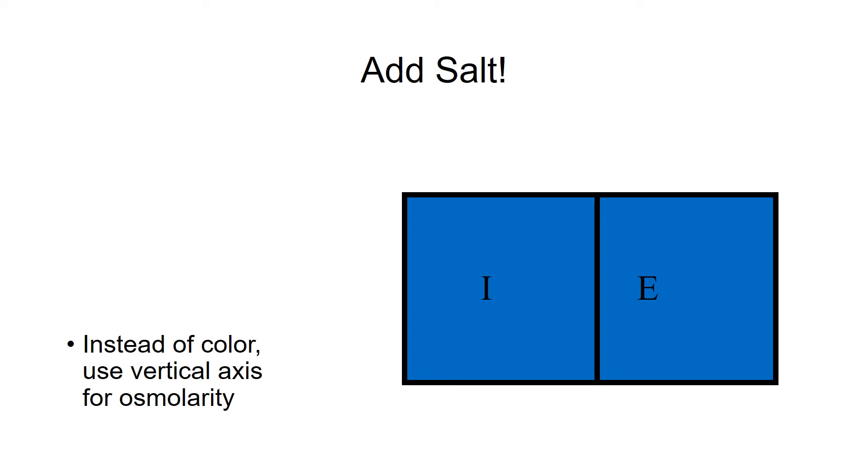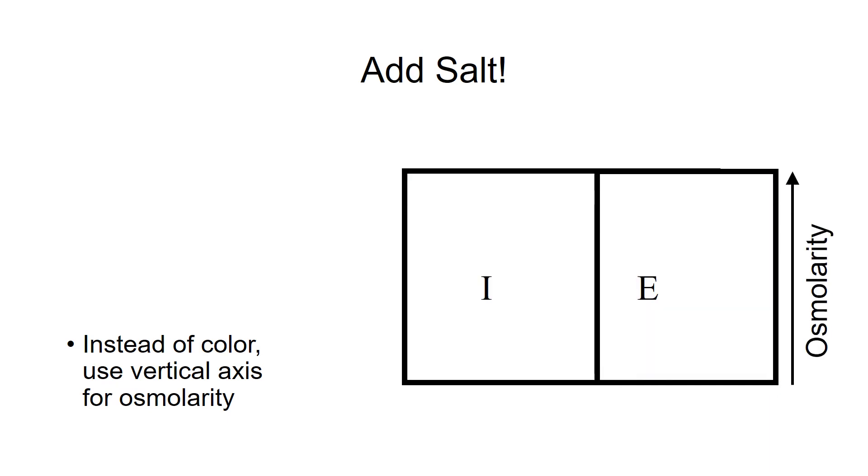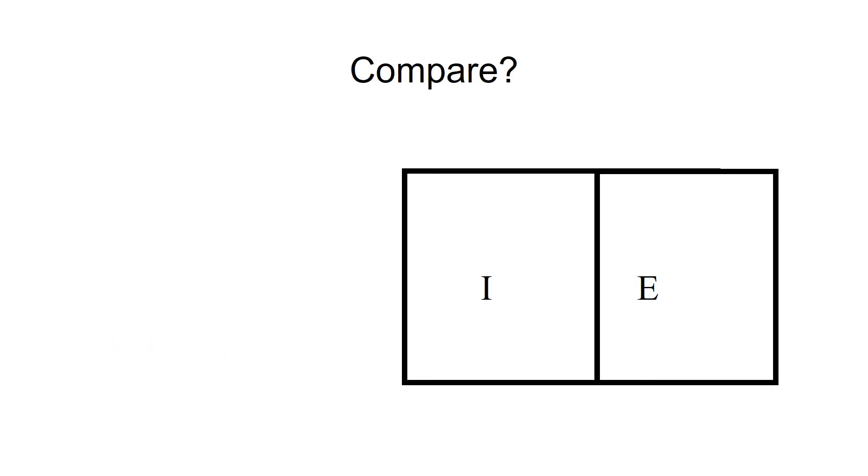The shades of blue were useful in explaining the concept, but you can imagine it is difficult to standardize shades of blue or red for exam purposes. So now we're going to get rid of the color and use the vertical axis to represent increased osmolarity.